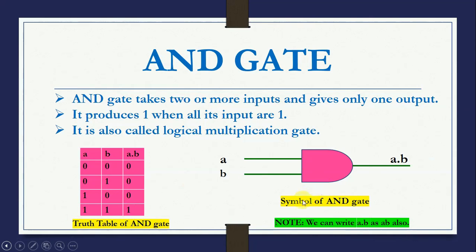The symbol of AND gate takes 2 inputs A and B and the output is A dot B. Note that A dot B can also be written as AB — the dot is optional. We can also have more than 2 inputs to an AND gate.